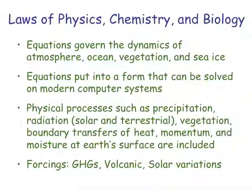We also have to treat physical processes such as precipitation, radiation — both solar and terrestrial — and boundary layer transfers of heat, momentum, and moisture at the Earth's surface. Then we can do experiments on changing forcings: the greenhouse gases, or volcanic or solar variations. Typically, most state-of-the-art climate models include all of these processes to some degree.